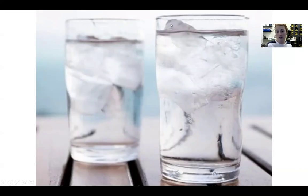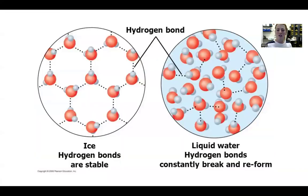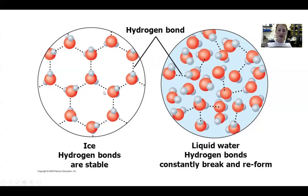Fun fact — when these ice cubes melt, the level of water will not change. So here is water as a liquid on the right, and these are the hydrogen bonds that are breaking and reforming constantly as a liquid. But when it freezes, it forms this crystal lattice where the hydrogen bonds are more stable. They form this crystal lattice which expands those molecules, making it less dense as a solid than as a liquid form — which is so cool.